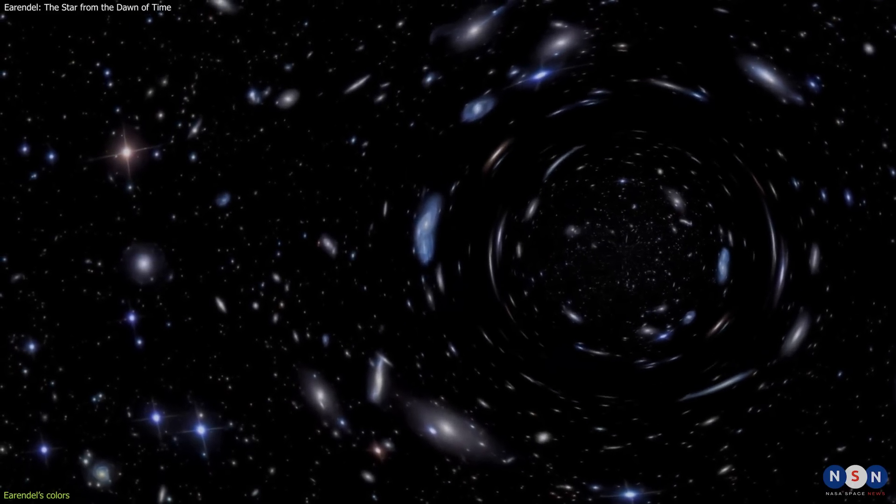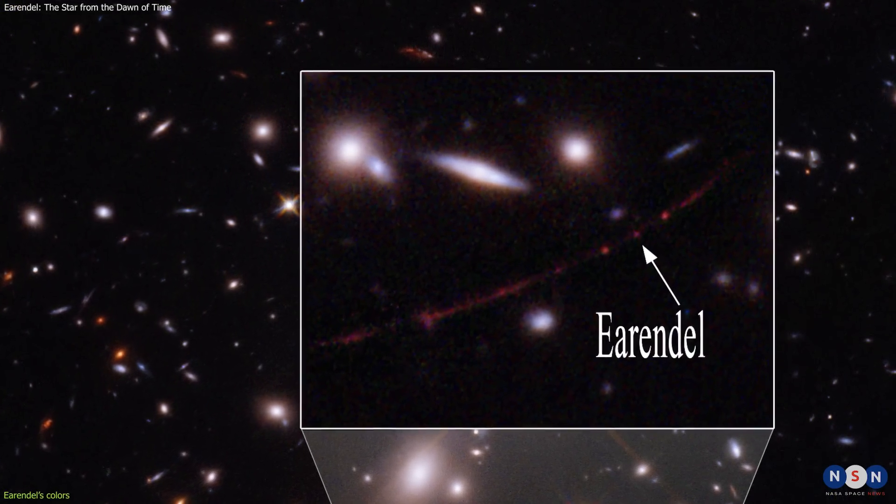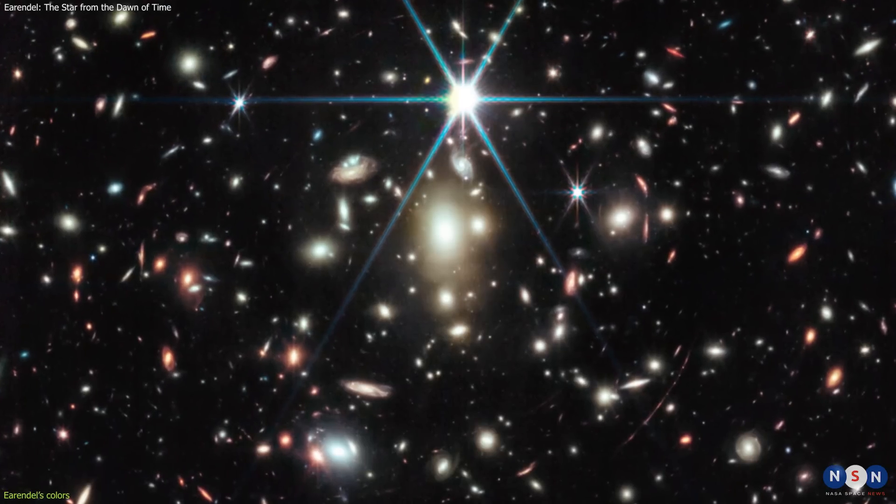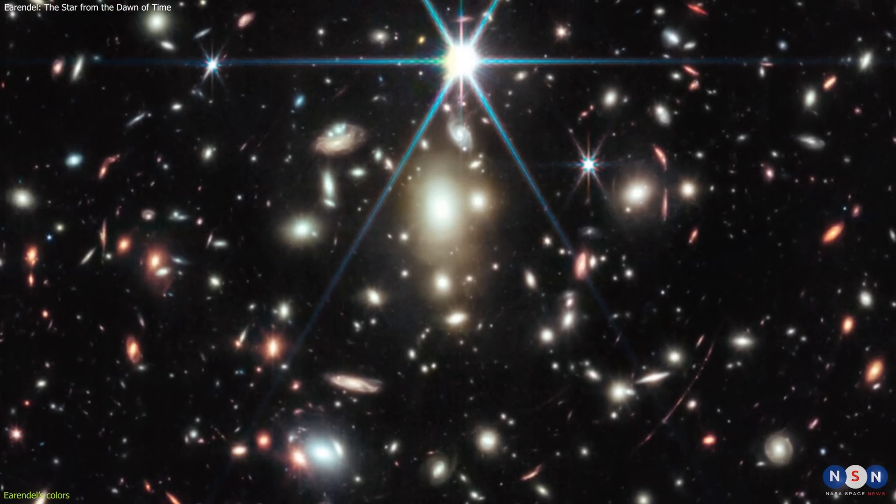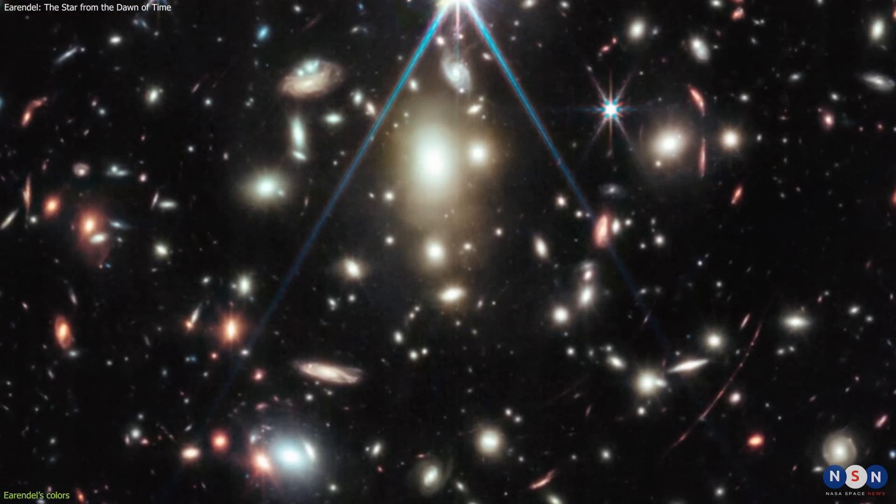Without the gravitational lensing effect of the galaxy cluster, Earendel would be too faint and small to be seen by Webb or any other telescope. But thanks to this cosmic magnifying glass, Webb was able to capture this amazing image of Earendel and reveal its colors and properties.